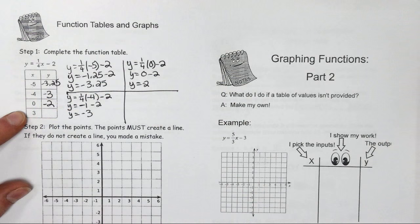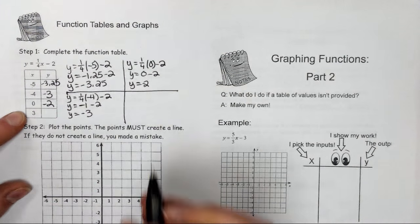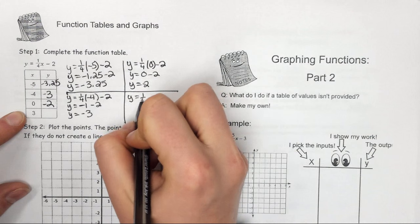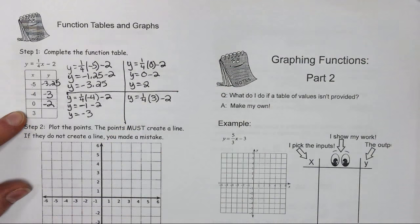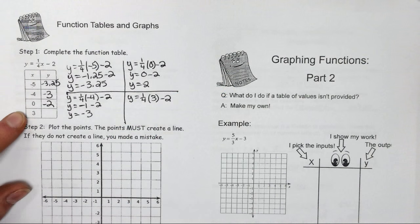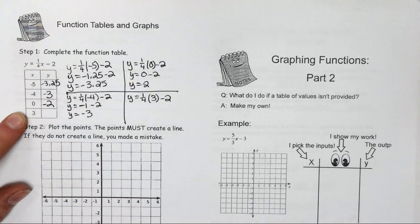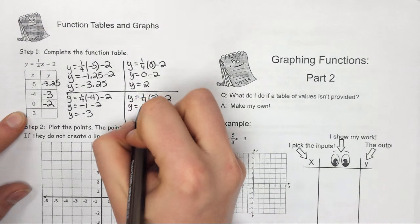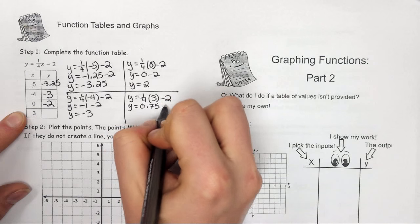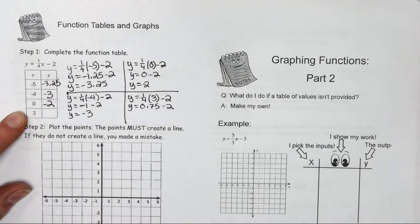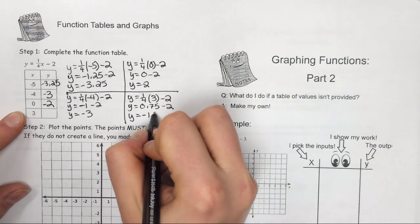My last one I have x equals 3. So that gives me y equals 1/4 times 3 minus 2. And 1/4 times 3 gives me 0.75, and then I would subtract 2. And I have y equals negative 1.25.